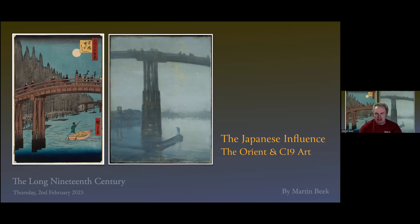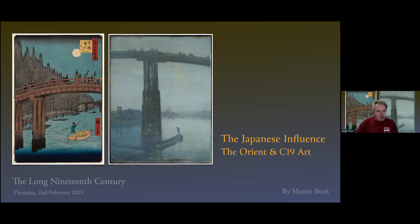A warm welcome this evening to The Long 19th Century. We're going to talk tonight about the Japanese influence on late 19th century art, particularly in Europe and the USA. We'll also look at the Orient in general, because its influence upon Western art was absolutely enormous and really changed the course of Western art, leading to modernism. It's quite a wide-ranging talk tonight, and I hope some of the images will be both familiar and surprising to you.